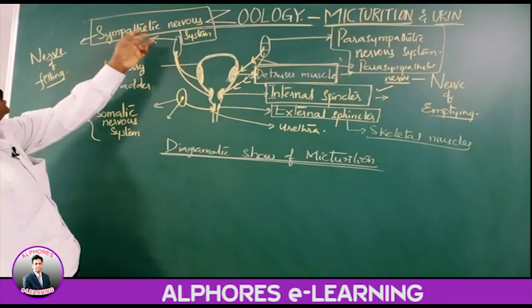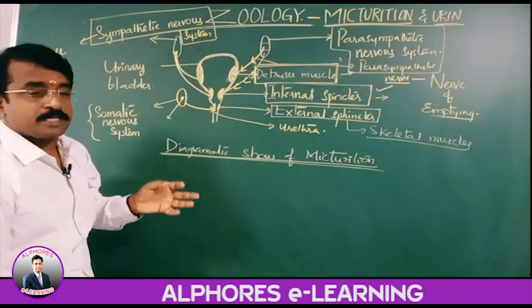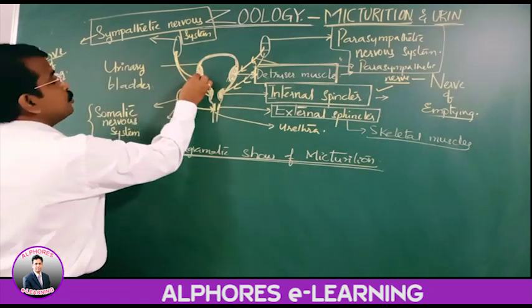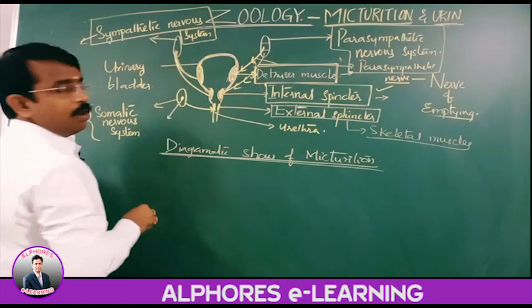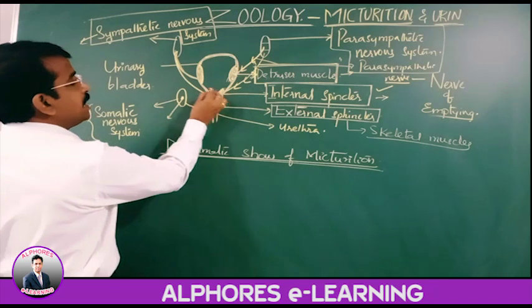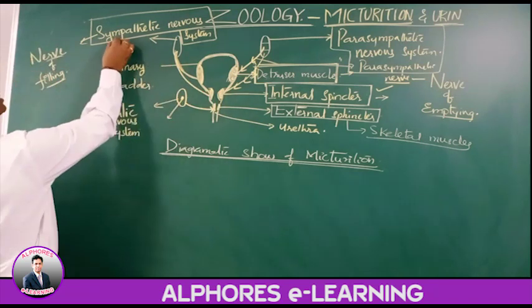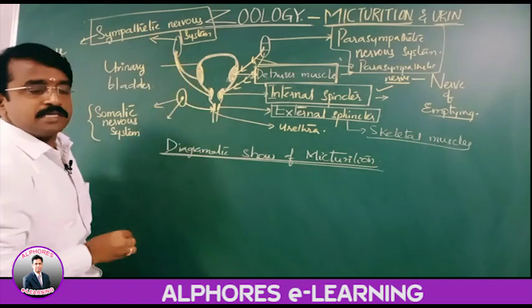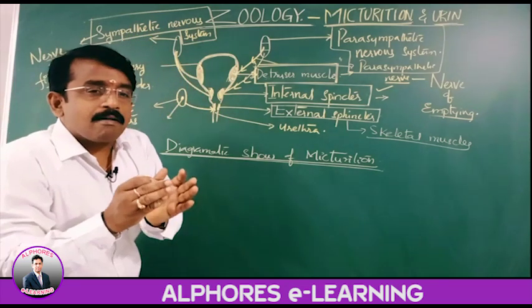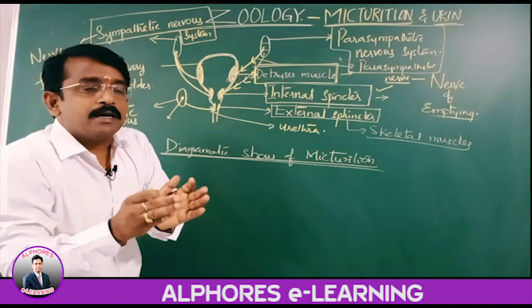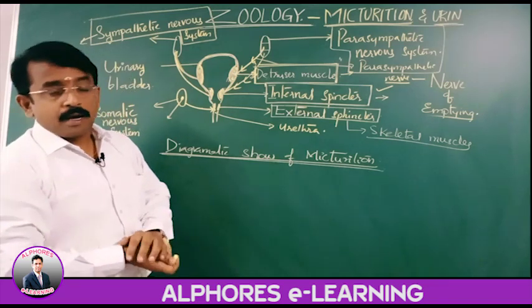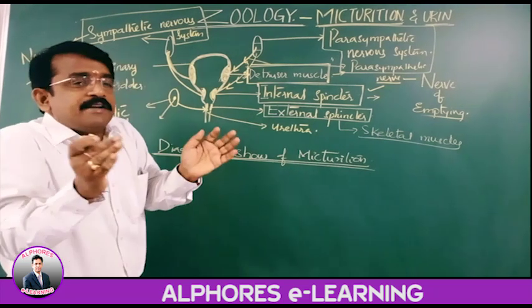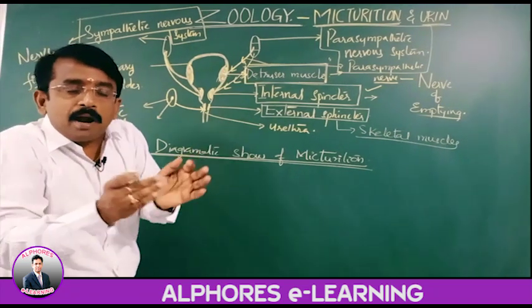The nervous supply of the sympathetic nervous system to the detrusor muscles causes the relaxation of the detrusor muscles. Relaxation of the detrusor muscles causes the dilation of the wall of the urinary bladder.